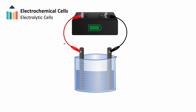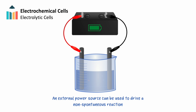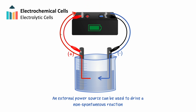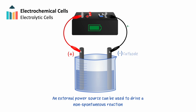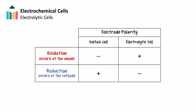In an electrolytic cell, electrical energy is used to drive a non-spontaneous redox reaction. We use a power source to set up potential across our two electrodes, making the electrode connected to the positive terminal of the battery the positive electrode, and the electrode connected to the negative terminal the negative electrode. Electrons flow toward the positive electrode and away from the negative electrode. This makes the negative electrode the cathode — the site of reduction — and the positive electrode the anode — the site of oxidation. Notably, the polarity of the anode and cathode in an electrolytic cell is opposite to that found in a voltaic cell, which is an important point of confusion for IB chemistry students.